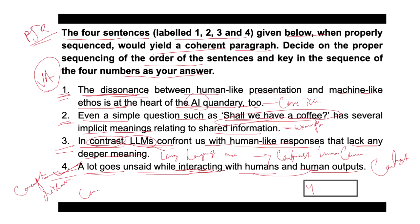After four, we look for an example — and that example is found in sentence two, which states that even a simple question like 'shall we have a coffee' has several implicit meanings related to shared information. This builds on the idea from sentence four, so four and two form an appropriate pair. Sentence two provides a specific example of how a simple question can carry implicit meaning.